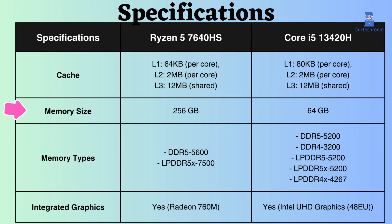Furthermore, the memory size supported by the Ryzen 7640HS is 256GB, whereas that of the Intel i5-13420H is 64GB. Consequently, the Ryzen 7640HS appears to handle high RAM loads effectively. Both processors support DDR5 and LPDDR5X memory modules, but the Ryzen processor supports higher memory frequencies for both DDR5 and LPDDR5X. To fully unleash their potential, the motherboard should also support these memory types and provide adequate memory support. Higher speeds contribute to improved memory performance.